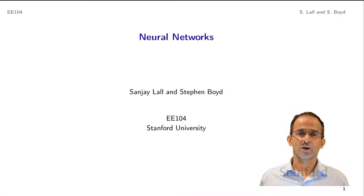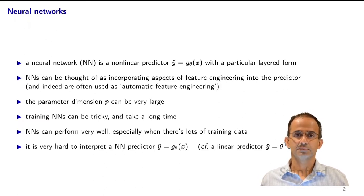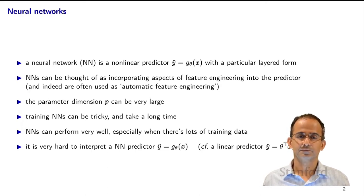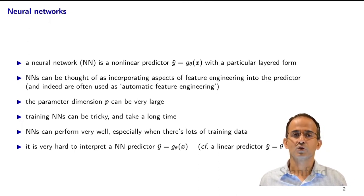Welcome to the section on Neural Networks. A neural network is a non-linear predictor — y-hat is g-theta of x — which has a particular layered form. One way to think about a neural network is that it incorporates aspects of feature engineering into the predictor, specifically automatic feature engineering. That's one of the strong reasons why neural networks are so popular: for very complicated classification and regression problems, it's not obvious what the right choice of features is, and having a system which can automatically determine the right choice of features is very powerful.